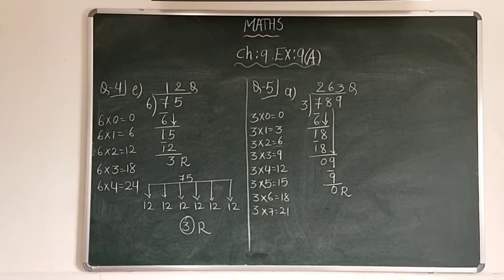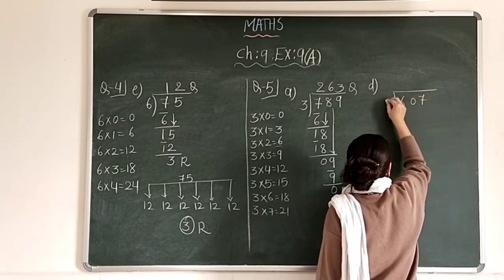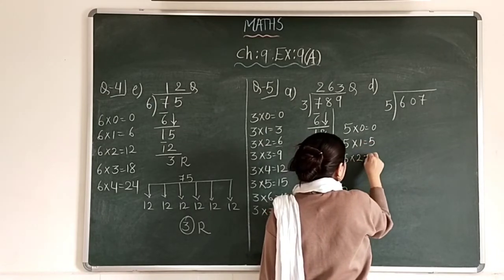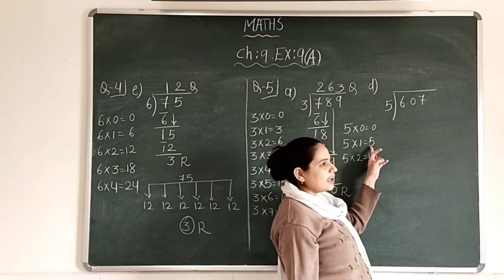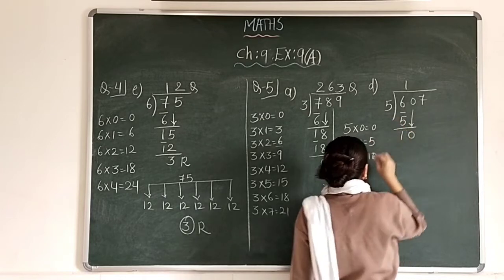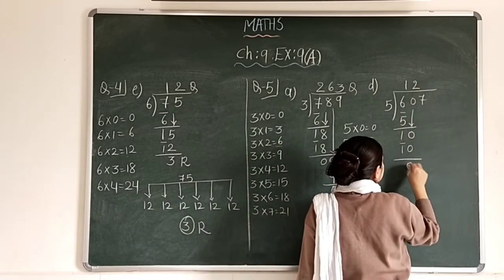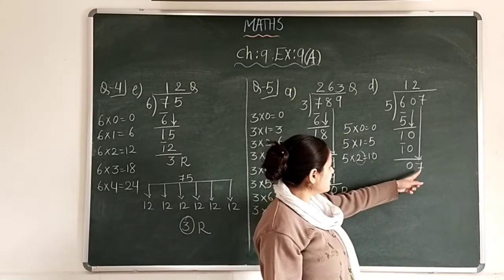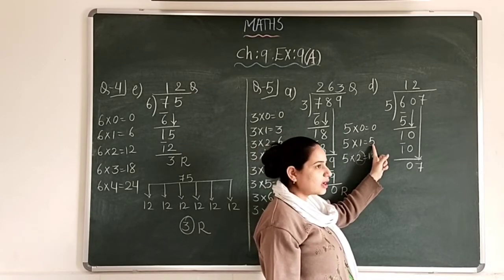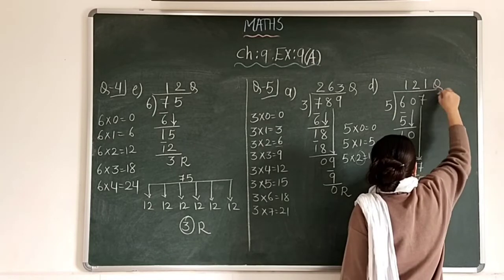Question 5D: 607 divided by 5. In 5's table: 5 1s are 5 — write 1, remainder 1. Bring down 0 to make 10. 5 2s are 10 — write 2. Bring down 7: in 5's table, 5 1s are 5 — since 5 is closest to 7 without exceeding it, write 1. Remainder 2 and quotient 121.